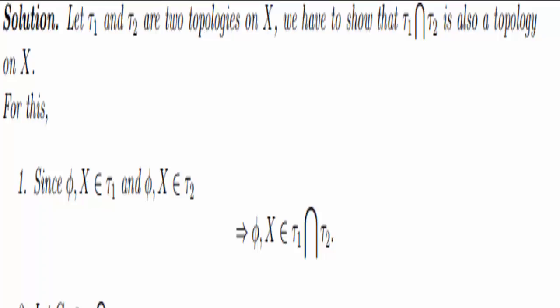Likewise, we can do the same thing with X. We know that X is in τ₁ because τ₁ is a topology on X, and X is in τ₂ because τ₂ is a topology on X. So as before, X is in the intersection. So the first condition was pretty easy to show.